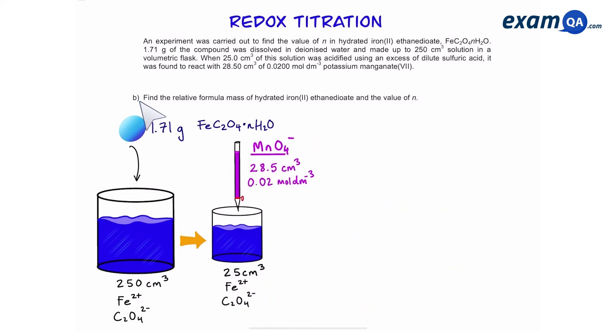Moving on to part B. Find the relative formula mass of the hydrated salt and the value of n. So to find the formula mass we need to know two things: the mass and moles of the salt. We already know the mass, it's 1.71 grams. However we don't know the number of moles.